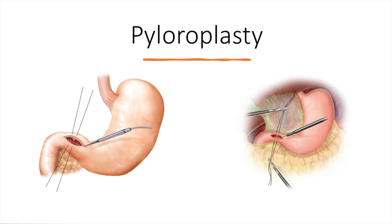In this first video, we will go over the pyloroplasty. In this picture on the left, we have the esophagus going into the cardia of the stomach, the fundus of the stomach, the body of the stomach, and then finishing in the antrum. The most distal component of the stomach is the pylorus, whose purpose is to properly contract and relax to either prevent or facilitate the passage of food, so that gastric content can move to the duodenum once it has been properly digested.